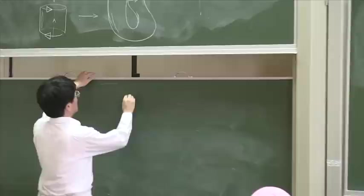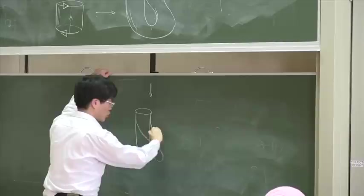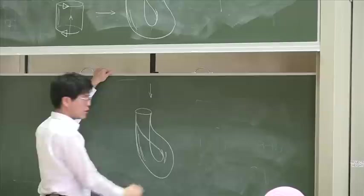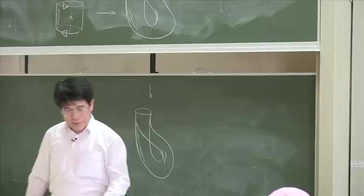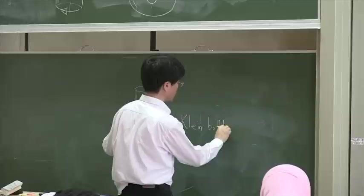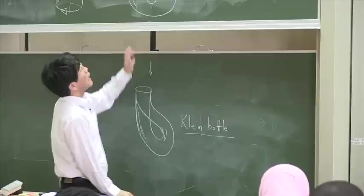And then, what we get is this very interesting surface, which I shall draw like this because it's impossible to draw coherently in three dimensional space. Can you get the feeling for this surface? This surface is the famous Klein bottle. Felix Klein was a very influential German mathematician towards the end of the 19th century and it's called the Klein bottle.